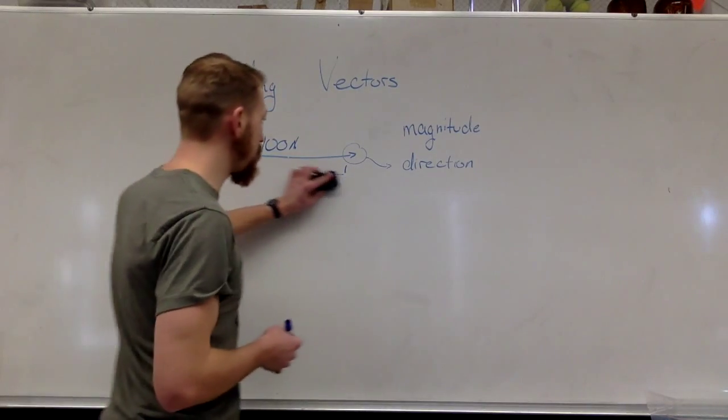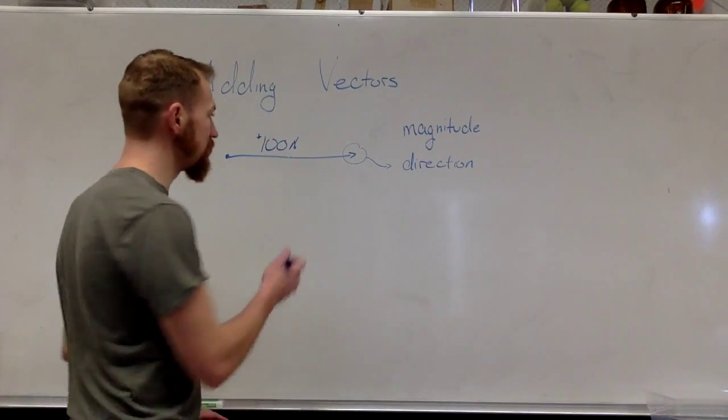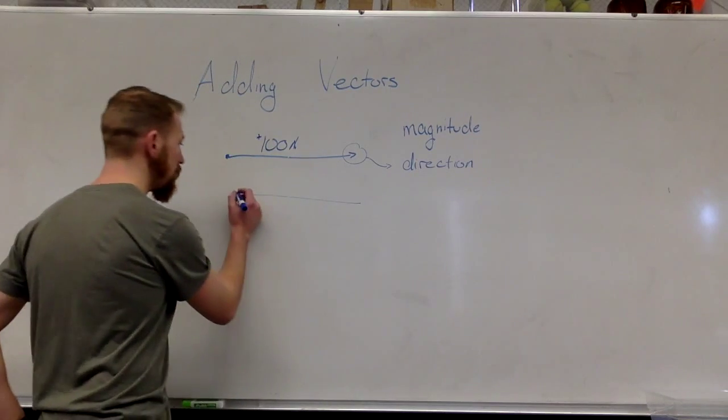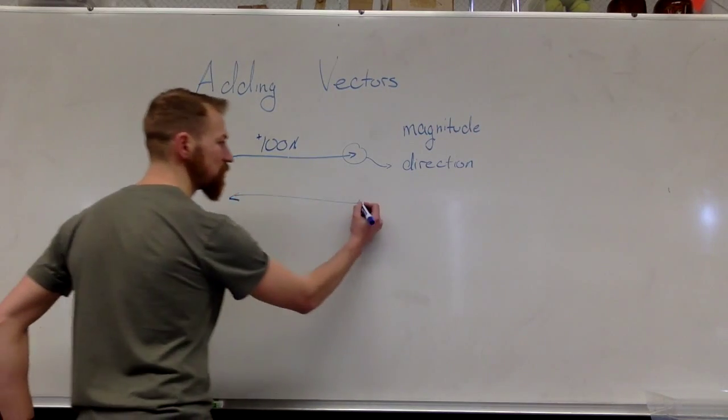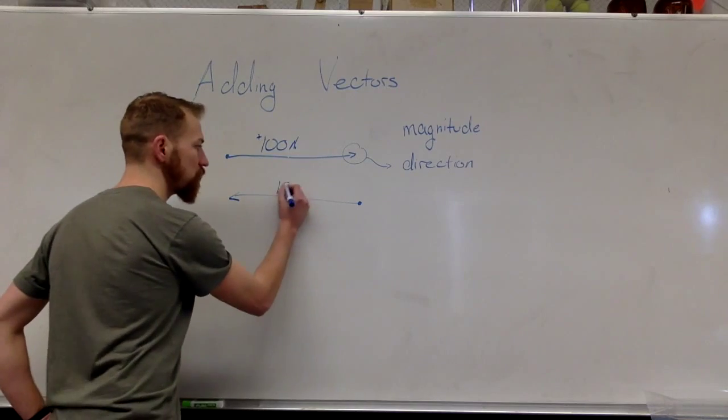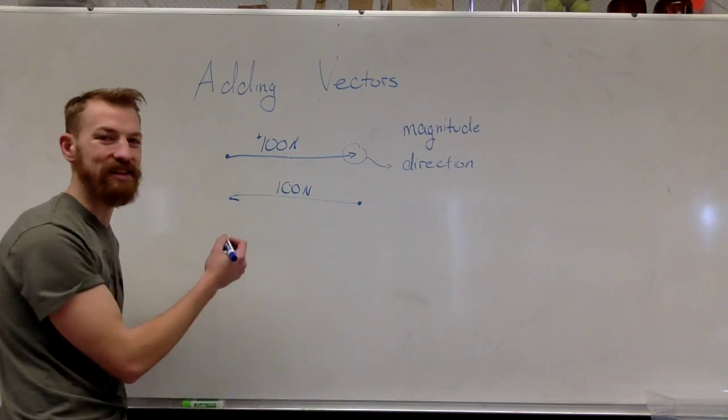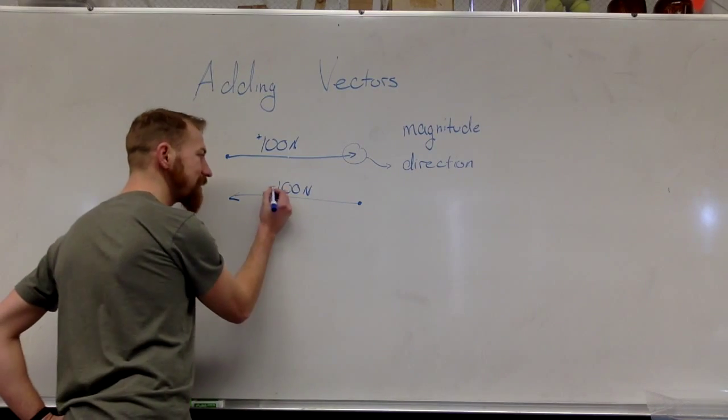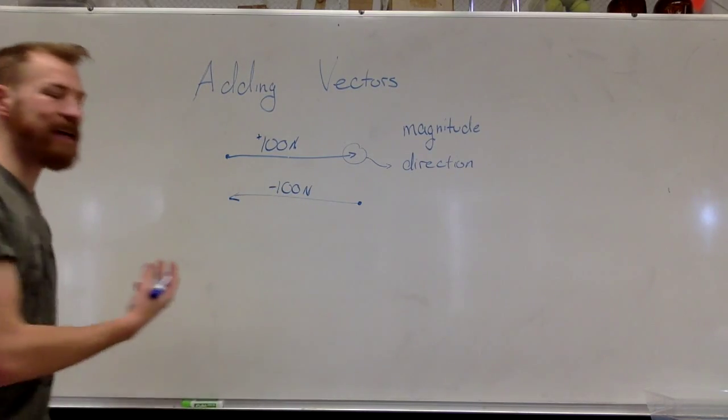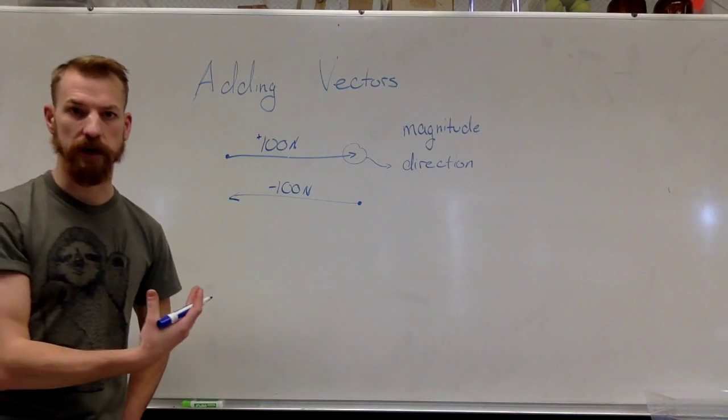And if we were to have a force vector in the opposite direction, and we'll make it the same magnitude just to make things easier, this would be 100 Newtons, the direction would be opposite. And with vectors, we use a negative sign to indicate that it is in the opposite direction.